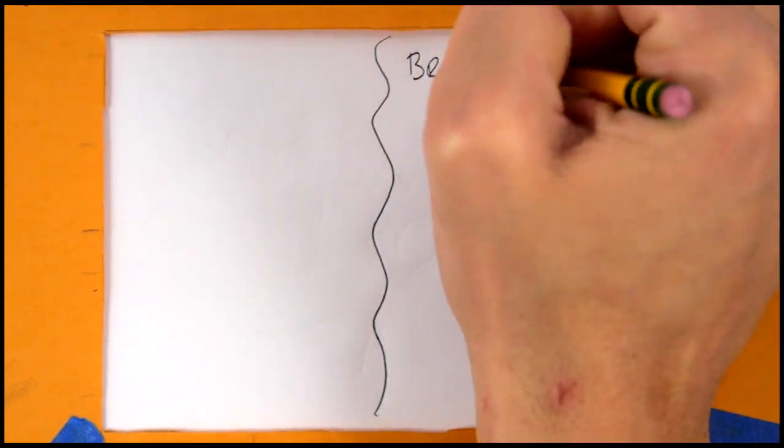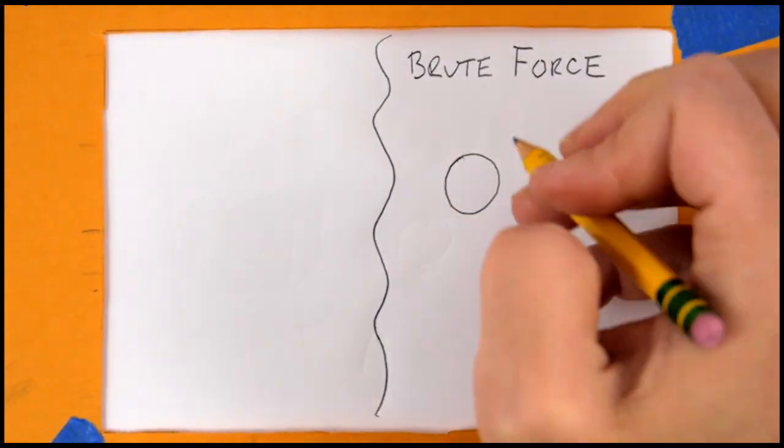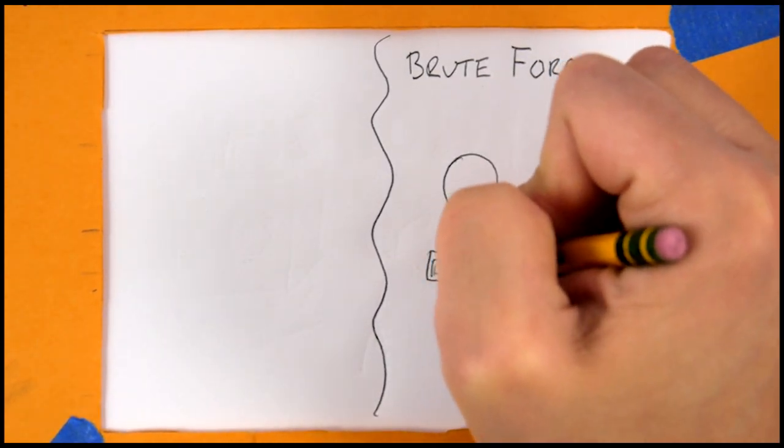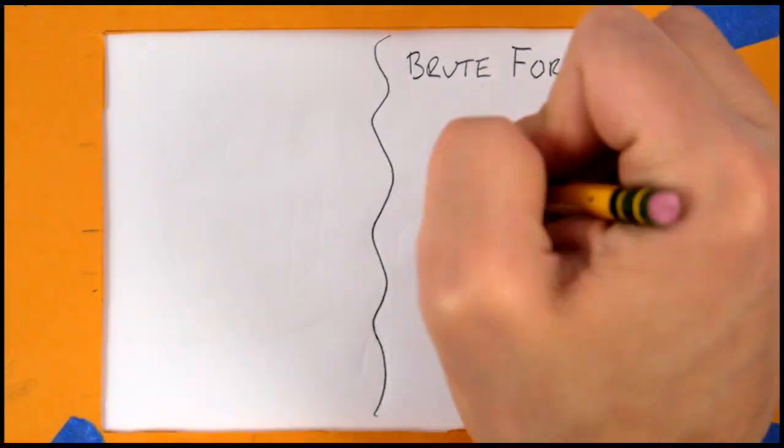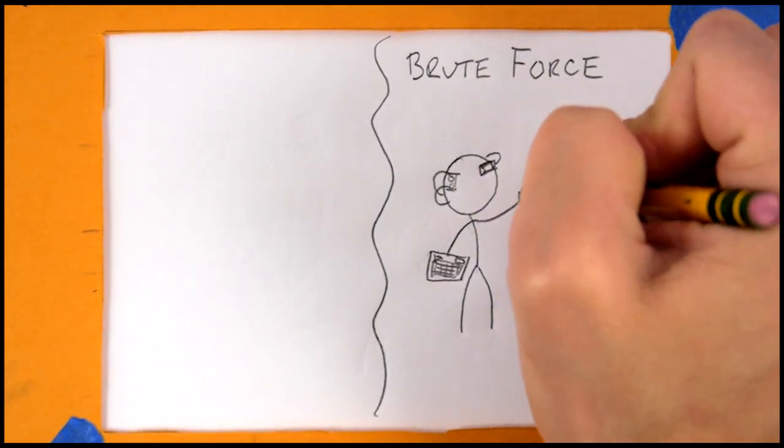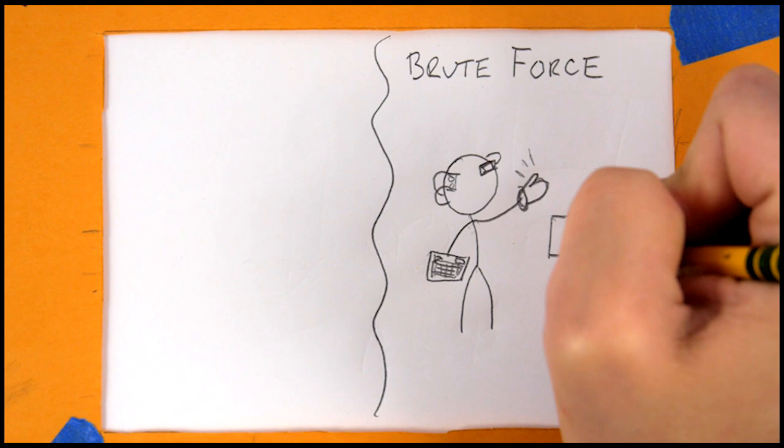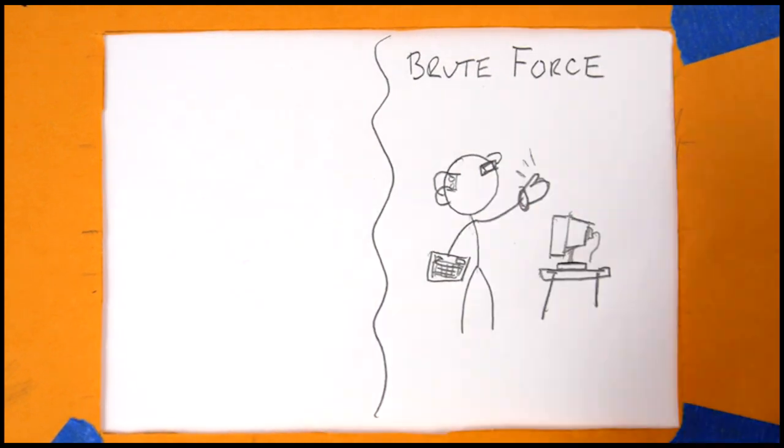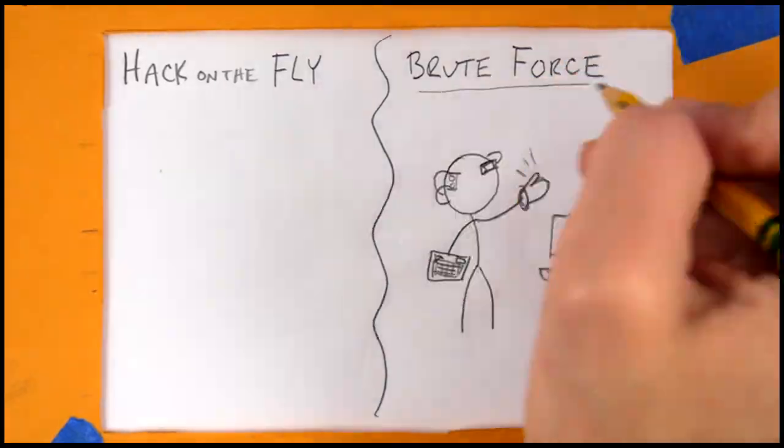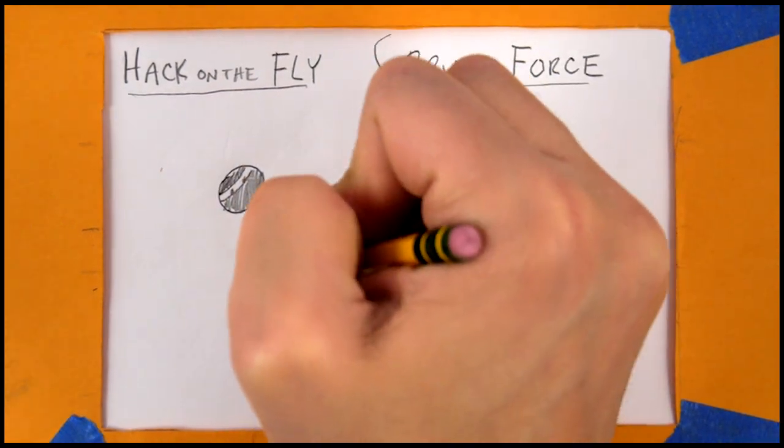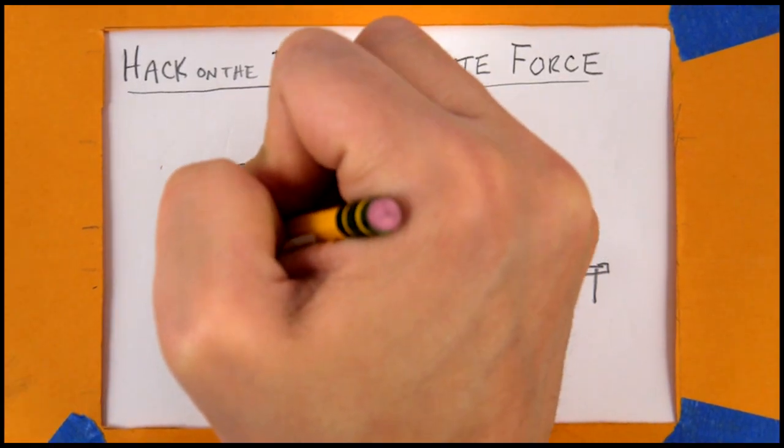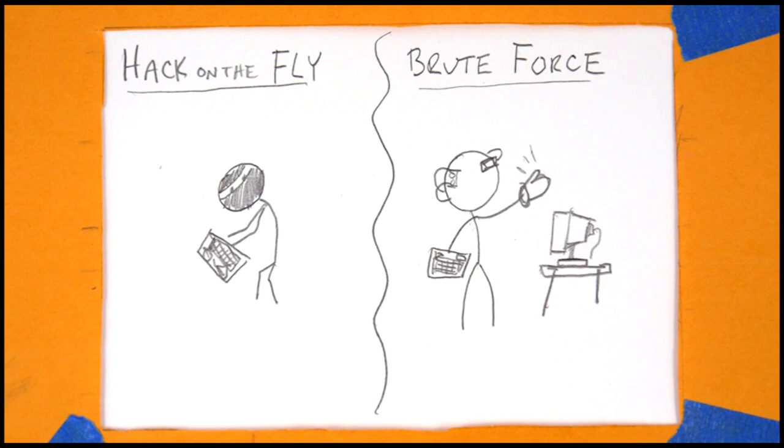The more common case for Shadowrunners, and therefore the arguably more interesting case, is the ways of illegally placing marks on a target. There are two ways to illegally place marks in the matrix. The methods used by each of these two ways is quite different, but they both end with the same result of having marked the target. These two methods are called brute force and hack on the fly.